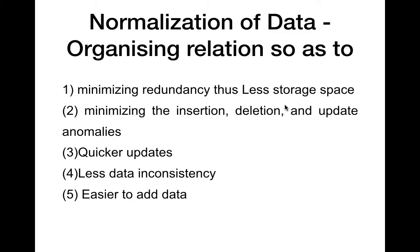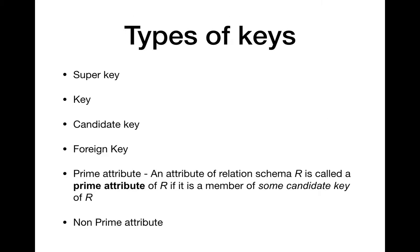We'll be seeing different types of normal forms we can achieve. Before moving into normalization, just a quick recap of the different types of keys we have learned: super key, key, candidate key, and foreign key — all four we have already discussed.